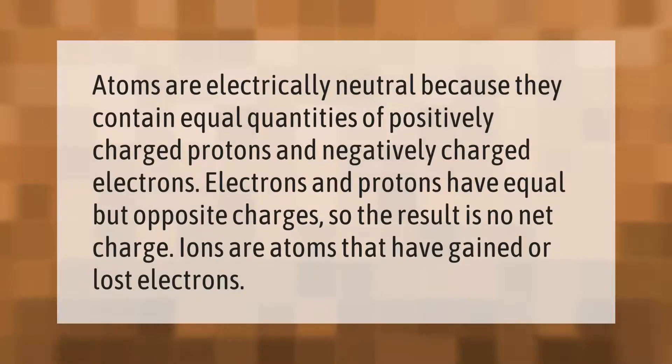Atoms are electrically neutral because they contain equal quantities of positively charged protons and negatively charged electrons. Electrons and protons have equal but opposite charges, so the result is no net charge. Ions are atoms that have gained or lost electrons.